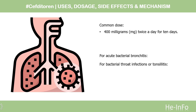Dose. The dose of this medicine will be different for different patients. For oral dosage form tablets, for acute bacterial bronchitis: adults and children 12 years of age and older, 400 mg twice a day for 10 days. Children under 12 years of age: use and dose must be determined by your doctor.